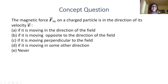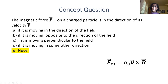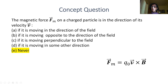The correct answer is never. The magnetic force is always perpendicular to the velocity vector and always perpendicular to the magnetic field vector. So if it's always perpendicular to velocity, it can never be in the direction of the velocity.